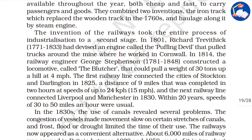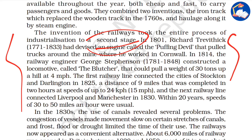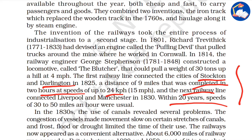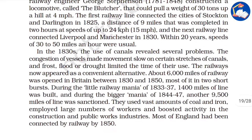The invention of railways took the entire process of industrialization to a second stage — the first stage being the steam engine. Richard Trevithick devised an engine called the 'Puffing Devil' that pulled trucks around mines in Cornwall. Railway engineer George Stephenson constructed a locomotive called the 'Blücher' that could pull a weight of 30 tons up a hill at 4 miles per hour. The first railway line connected the cities of Stockton and Darlington, covering nine miles in two hours at a speed of 15 miles per hour. The next railway line connected Liverpool and Manchester in 1830.